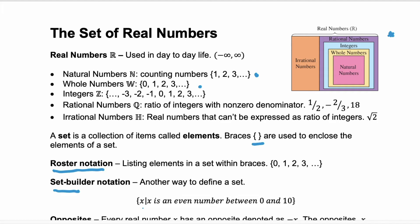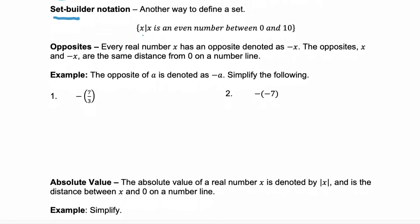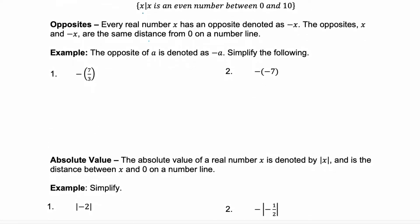Now let's really dive into those real numbers and what we can do with them. First we're going to talk about opposites. So every real number has an opposite denoted as negative X for X. The opposites X and negative X are the same distance from 0 on a number line.